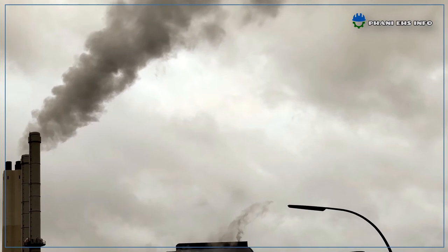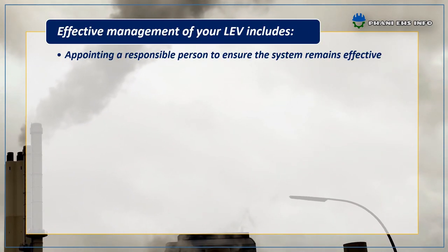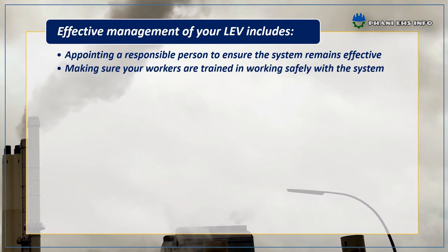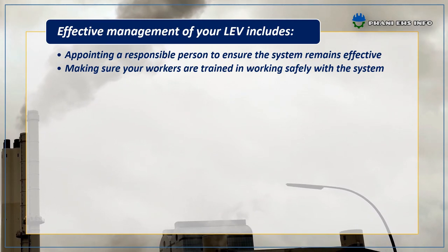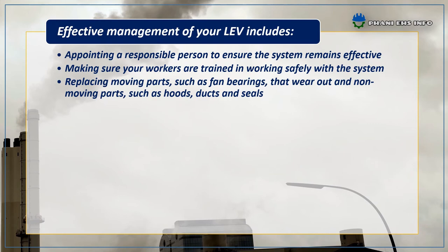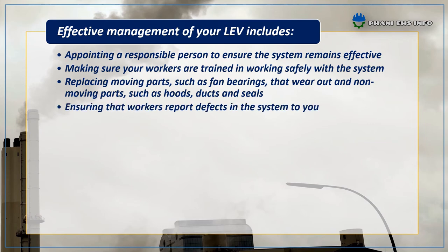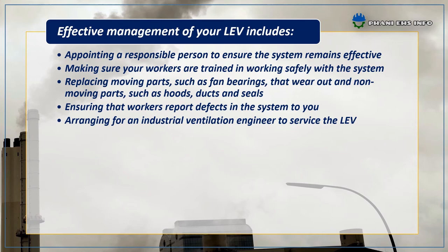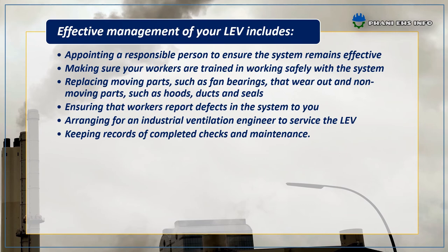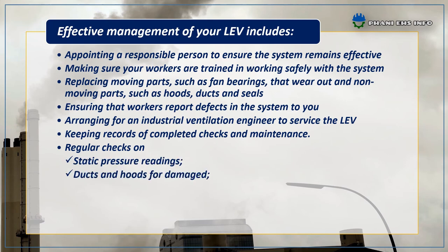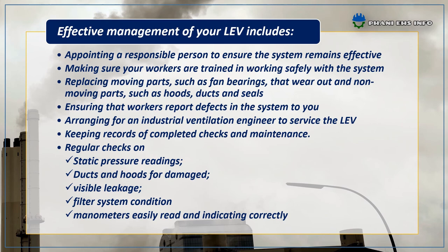Finally, effective management of LEV systems. First, appoint a responsible person to ensure the system remains effective. Second, make sure your workers are trained in working safely with the system. Third, replace moving parts such as fans and bearings, as well as non-moving parts such as hoods, ducts, and seals that wear out. Fourth, ensure that workers report defects in the system. Fifth, arrange for an industrial ventilation engineer to service the LEV system. Sixth, keep records of competent checks and maintenance. And conduct regular checks on static pressure readings, ducts and hoods for damage, visible leakages, filter system conditions, and manometers to confirm they are readable and indicating correctly. This covers the basics of industrial ventilation.